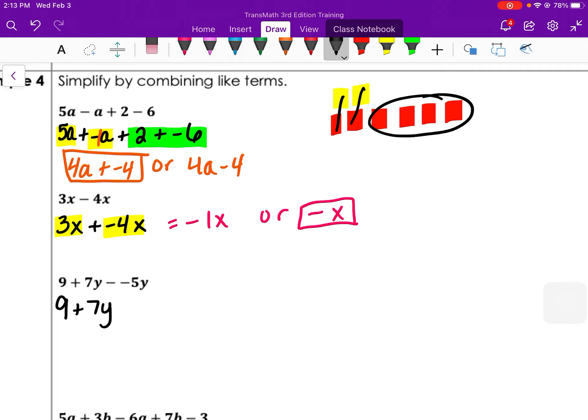This one would be 9 plus 7y minus a negative would be plus a positive. And then we have a 7y plus a 5y that are alike, which would make 12y. And then we have a positive 9 out front, so it would be 9 plus 12y or 12y plus 9.